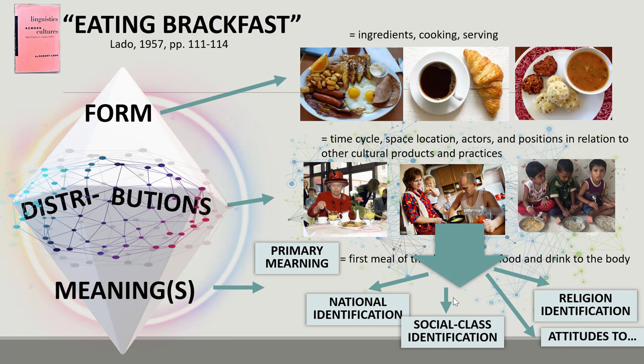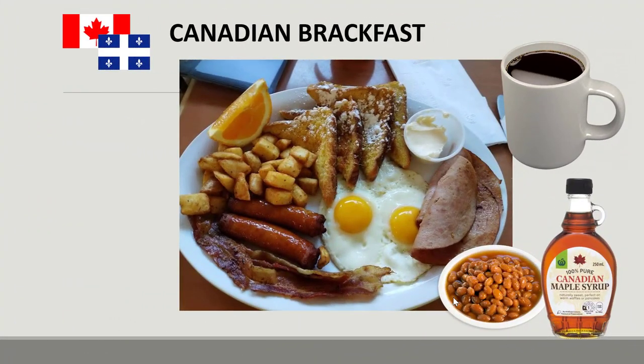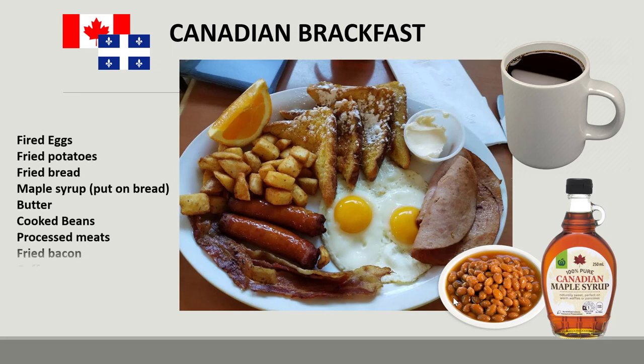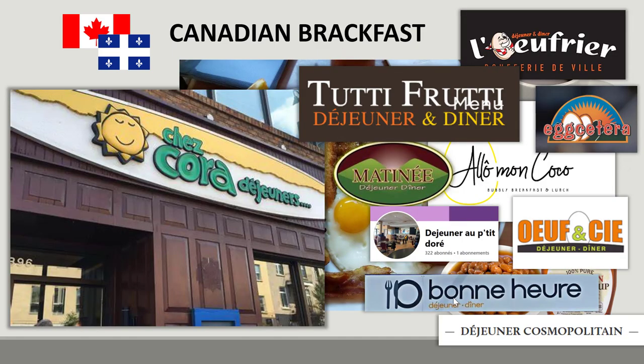Let's develop Lado's example of breakfast by examining national identity connotations associated with breakfast in French Canada. A Canadian-style breakfast is a rich-in-calories meal that usually contains fried eggs, fried potatoes, fried bread, maple syrup and butter on bread, cooked beans, meat including fried bacon, coffee, and optionally a piece of fruit. People cook and eat it at home, but often, especially on weekends or holidays, in restaurants specialized in breakfast.